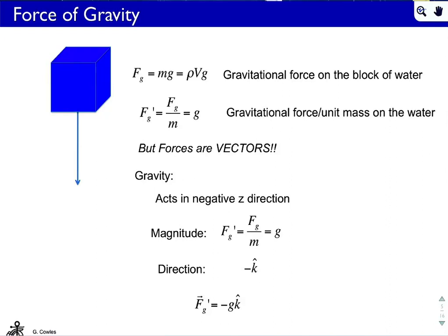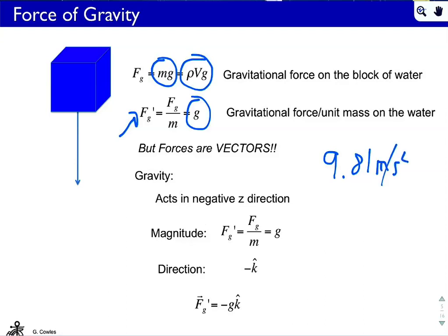Gravitational force is probably the easiest conceptually. The force due to gravity is simply mass times g — written in fluid mechanical sense as rho*V*g. If we want force per unit mass, we divide by rho*V and get simply g, which has units of acceleration, with a value at the surface of the Earth of about 9.81 meters per second squared. Forces are vectors, and gravity will only affect the momentum in the vertical — it will only influence vertical momentum, not horizontal.